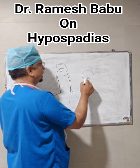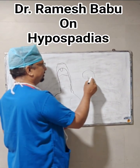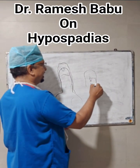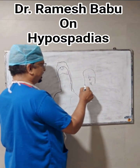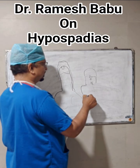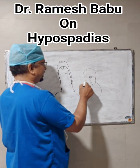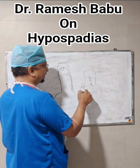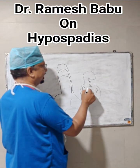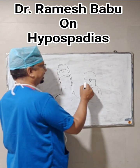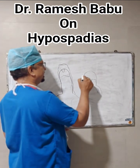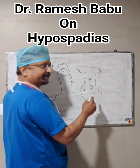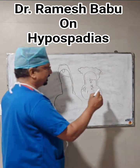Because of the displaced opening, the tissue in that area causes the penis to bend downwards. Sometimes the scrotum is also involved, tethering the penis, and the skin is only present on the top.